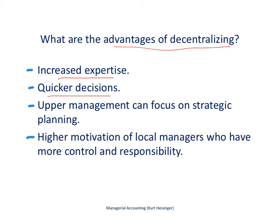Decentralization also makes for quicker decisions. If managers are overseeing just a few stores rather than hundreds, decisions about hiring employees or picking a supplier are quicker to make for a smaller unit. Upper management can then focus on strategic planning for the organization as a whole, rather than day-to-day operations of each subunit. It also provides higher motivation for local managers, who have autonomy and feel more control over their division — and that serves as a motivator.